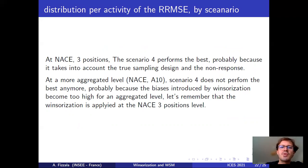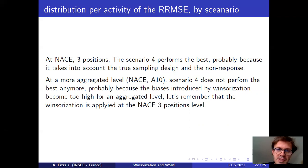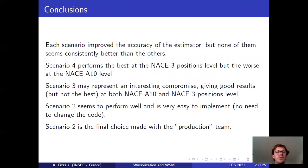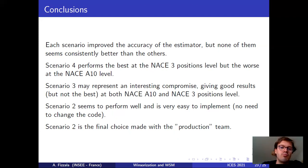We have also tried this at a more aggregate level, where scenario four does not perform best — in fact, it performs the worst. The interpretation is that too much bias is introduced by Winsorization at the aggregate level because the Winsorization is applied at the three-digit NACE position. In conclusion, each scenario improves the accuracy of the estimator, but none seems consistently better than the others — it depends on the activity being studied. The final choice made with the production team is scenario two, because it is easier to implement and performs quite well.